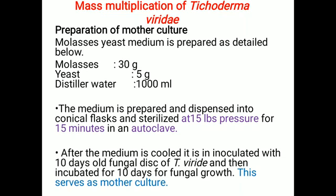For example, root rot, stem rot, wilt disease, Pythium, Phytophthora — most of these soil-borne diseases are easily controlled with the help of biocontrol agents. That's why we need to multiply Trichoderma viridi, Pseudomonas, or Bacillus — that is, we multiply these biocontrol agents.